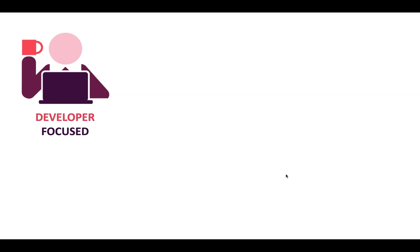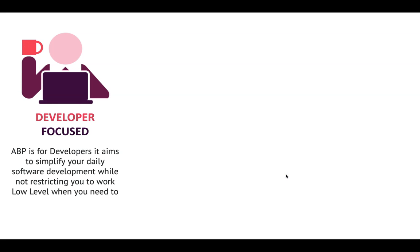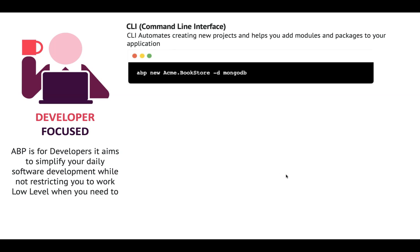Finally, most important of all, it is focused with you, the developer, in mind. ABP is built for developers by developers. It aims to simplify your daily software development while not restricting you. ABP offers you a command line interface, CLI, to automate creating new projects and helps you to add modules and packages to your applications. The CLI also helps you update the ABP components when new versions of the ABP framework are released.